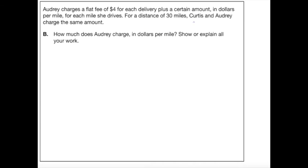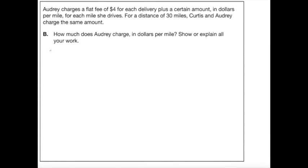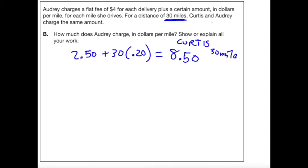So Curtis is still charging $2.50 plus $0.20 per mile. So one thing that I could do is find out how much does Curtis charge for 30 miles. That'll be $2.50 plus $0.20 per mile. And we got, I think we're going to come out with $8.50. All right, that's how much Curtis charges for 30 miles. Now, beautiful thing is, now we know what Audrey charges for 30 miles as well, because they charge the same amount.